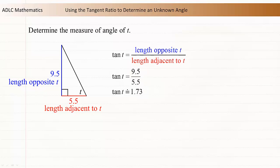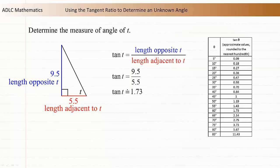9.5 divided by 5.5 is approximately 1.73. Now we can use a table of tangent values to find the value of t. The tangent ratio of approximately 1.73 corresponds to 60 degrees.